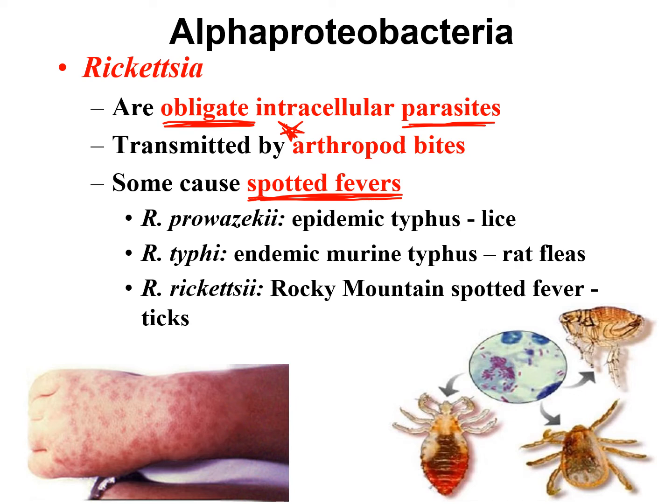Typhus is more common in crowded conditions because that's how lice spread easily from person to person — we see it in refugee camps, and it spread in concentration camps during World War II. One of the more famous people who died of typhus was Anne Frank.